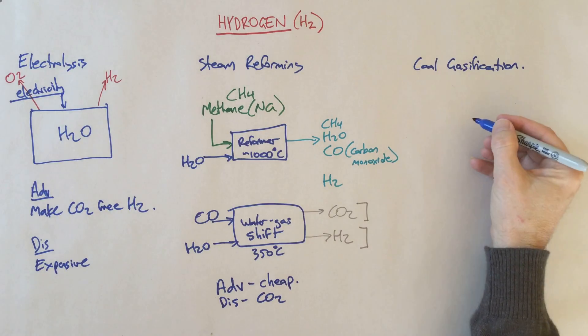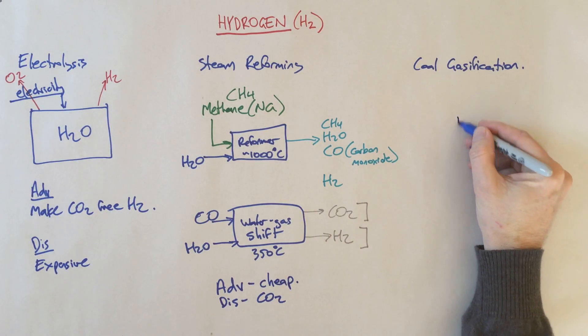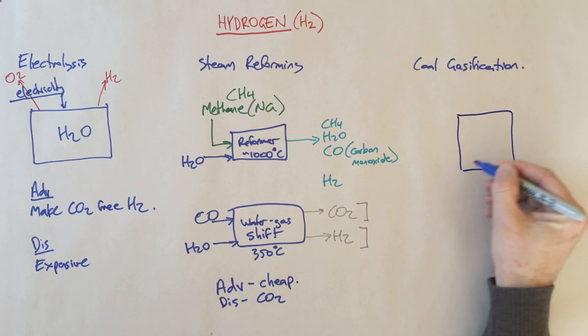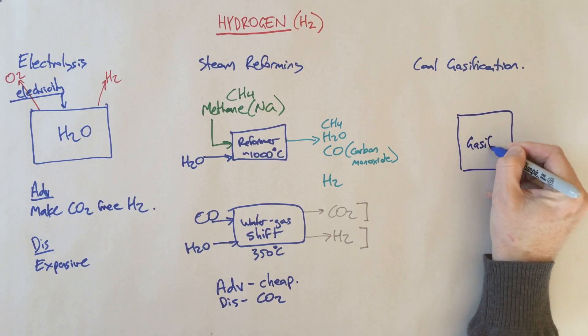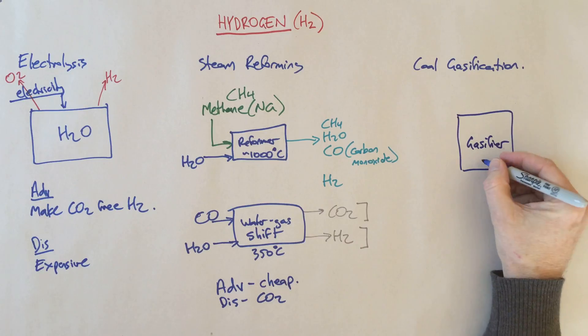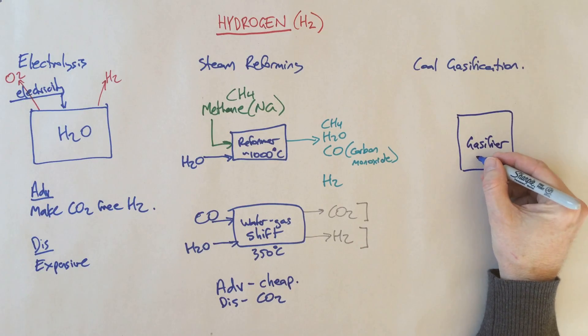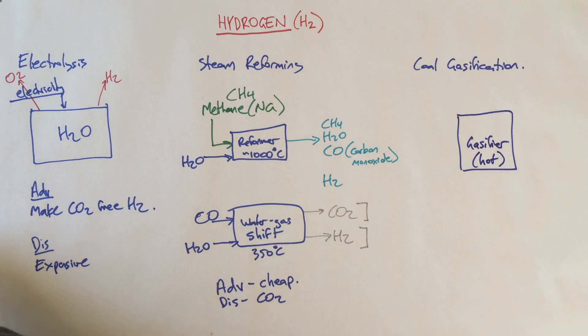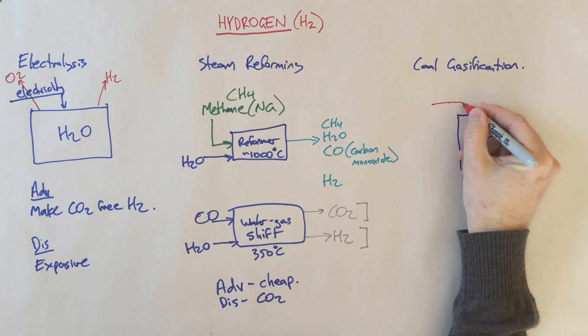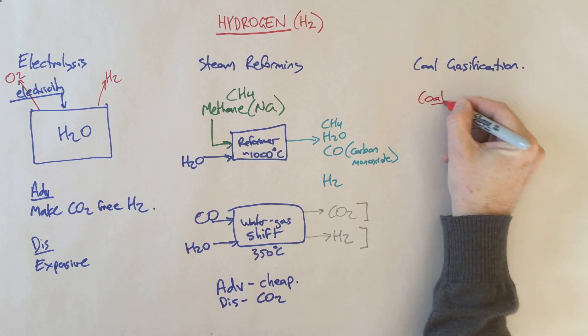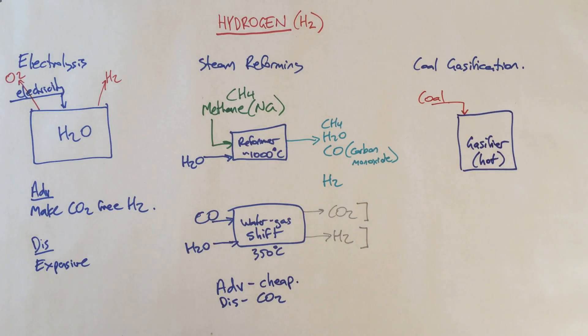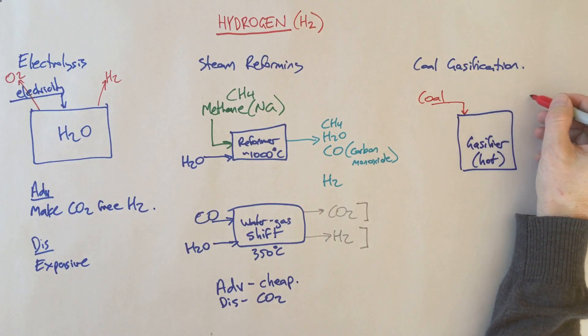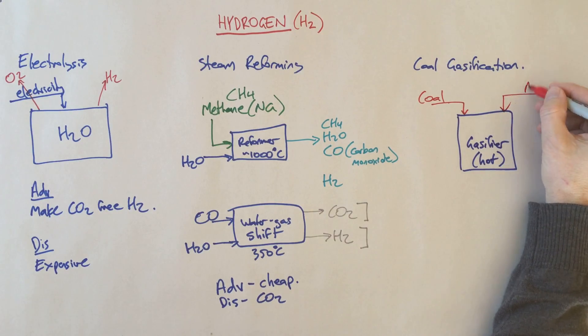The third form is coal gasification. These use big reactors called gasifiers. They operate pretty hot - the temperature range can vary quite a lot so I'll just say they're hot. What we do typically, as the name suggests, is add coal to them. It could be black coal or brown coal.